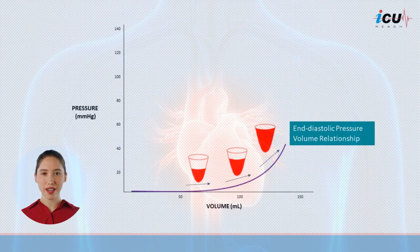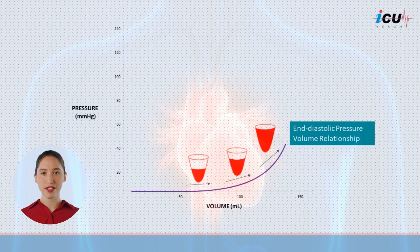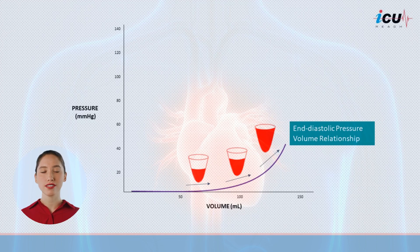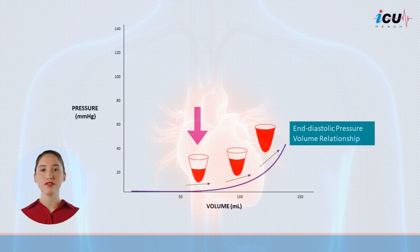To understand it better, let's look at the relationship between the pressure and the volume in the left ventricle. During the filling phase of the left ventricle, known as diastole, blood flows from the left atrium into the ventricle. Initially, the ventricular pressure rises minimally, despite significant volume increase due to the ventricle's high compliance.